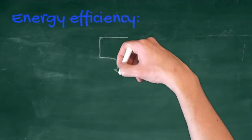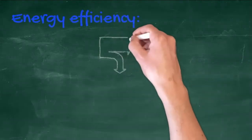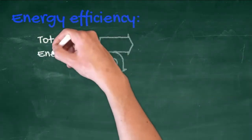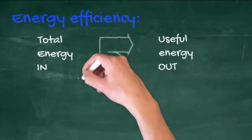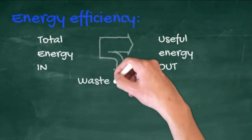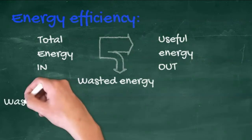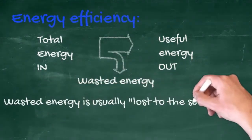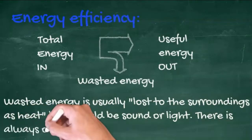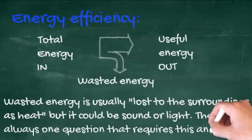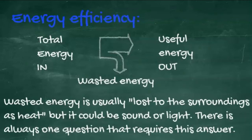Sankey diagrams are used to show the efficiency of something, with the total energy in, the useful energy out, and the wasted energy all identified. The wasted energy is usually described as lost to the surroundings as heat, but it could be lost as light or sound as well. There's always one question that asks this.